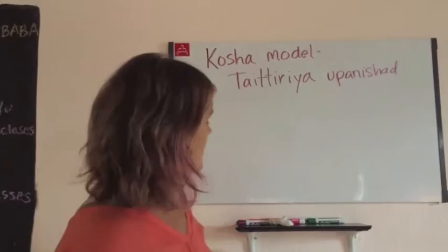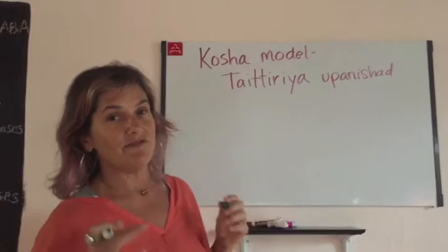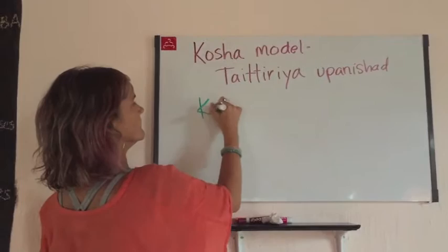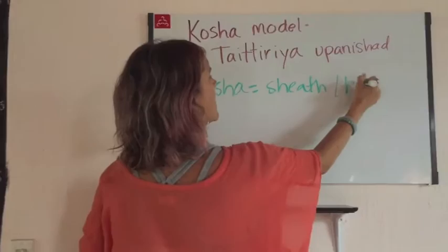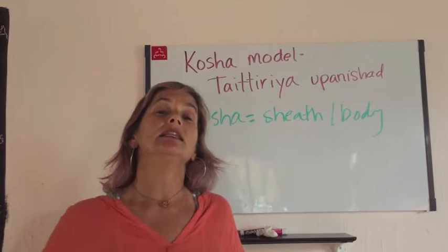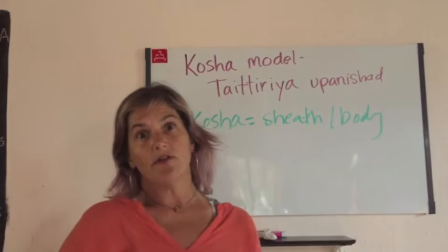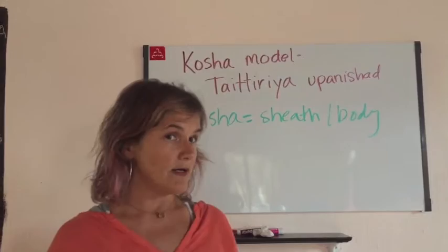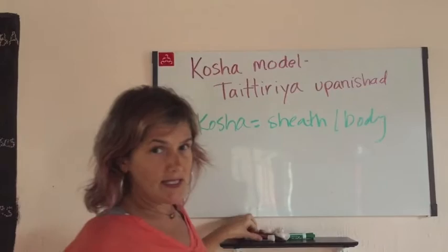I'd like to introduce you to this model — it's called the kosha model, and it comes from the Taitiriya Upanishad. In the kosha model, it is believed that we have five different levels of being. The word 'kosha' means something like sheath or body, and in this model it's said that we have five different of these sheaths or bodies. We exist on five different layers, and we can attend to each of these layers. They're quite simple and really practical.